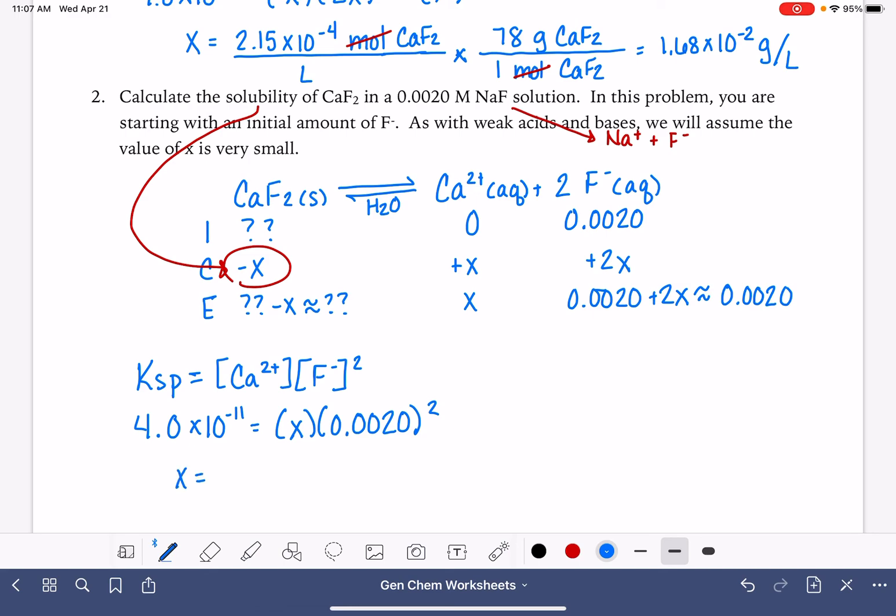So now we're just going to solve for x. 4.0 times 10 to the -11, divided by 0.002 squared. X is 1 times 10 to the -5. Again, remember that that's in units of molarity, so that's moles of calcium fluoride per liter. And we need to give our answer as solubility, which is going to be in units of grams per liter. So we convert, moles of calcium fluoride into grams, 78 grams per mole for calcium fluoride. And our answer is 7.8 times 10 to the -4 grams per liter.